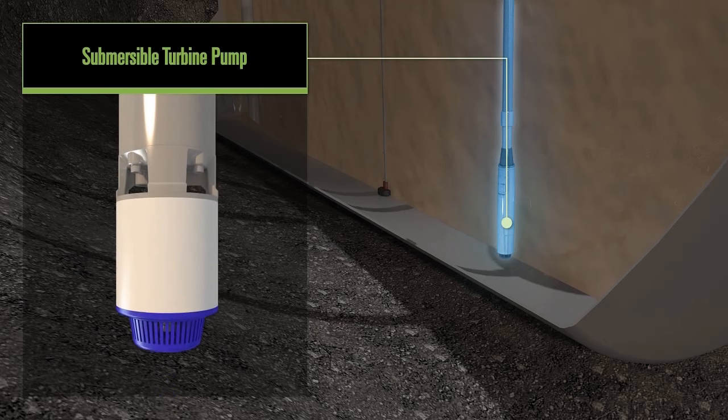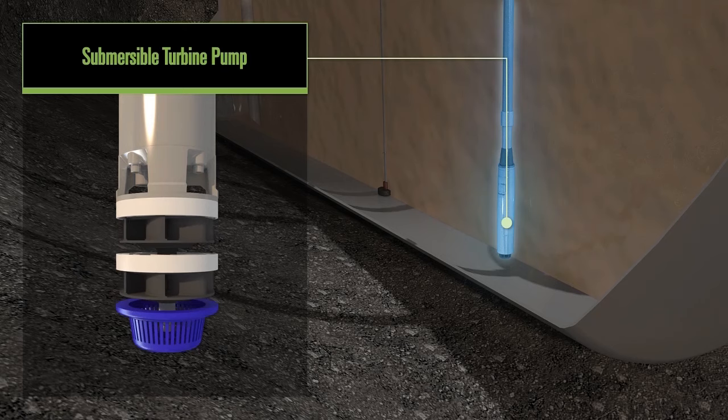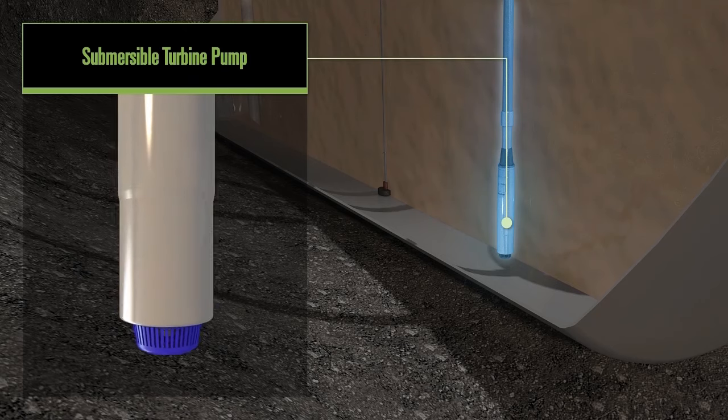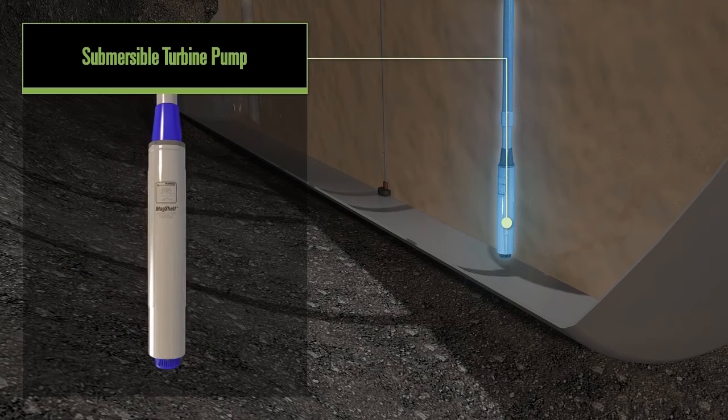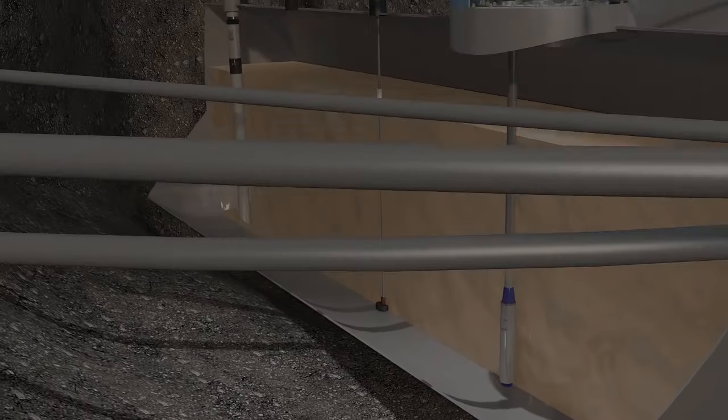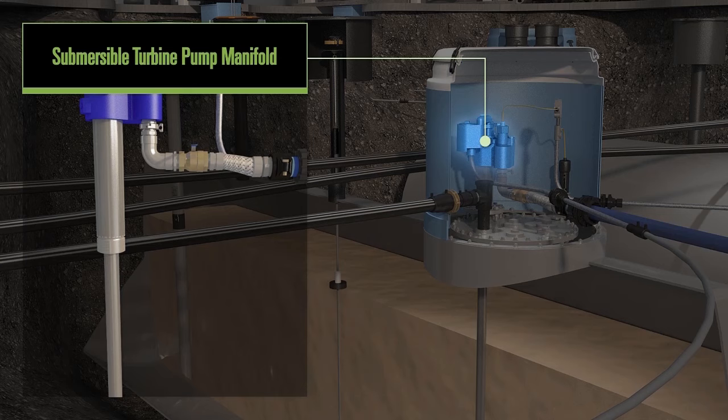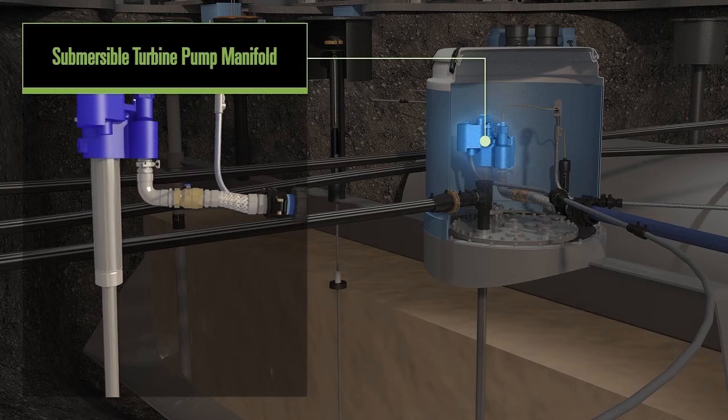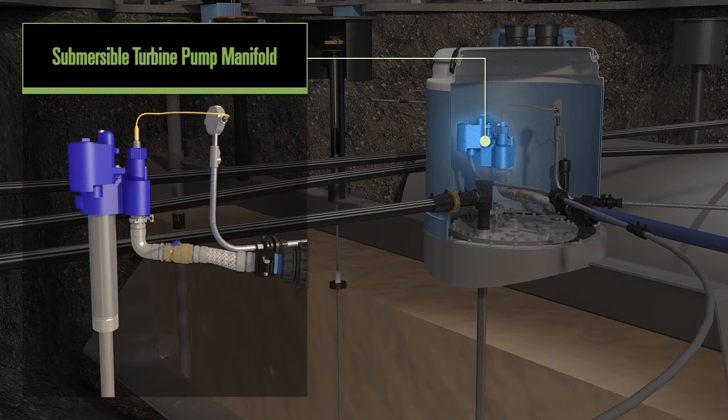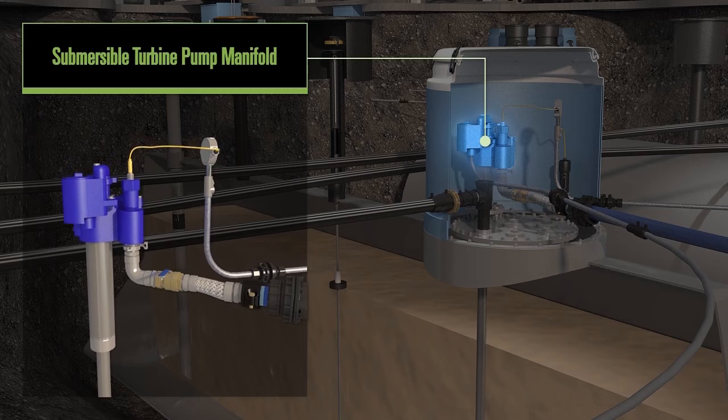Our submersible turbine pump is a centrifugal design, which means that fuel is forced up through the pump by spinning impellers to create pressure and flow out the top of the submersible pump, known as the manifold. The manifold houses the electrical supply to the motor and also the pathway for the fuel to get to the pipe.